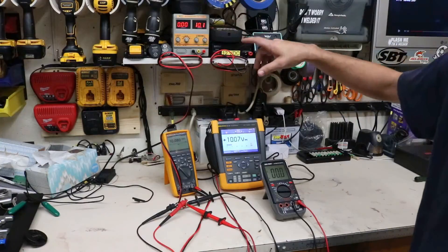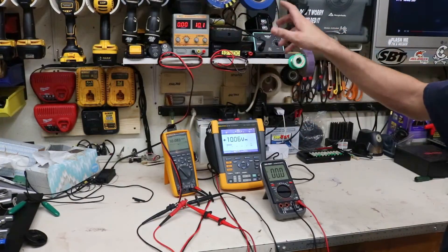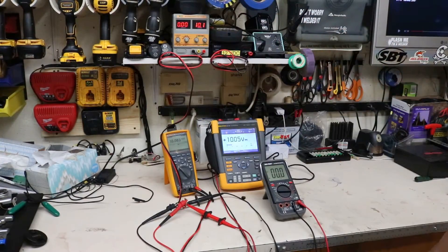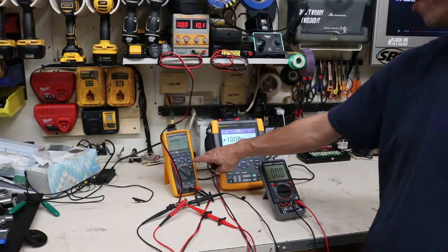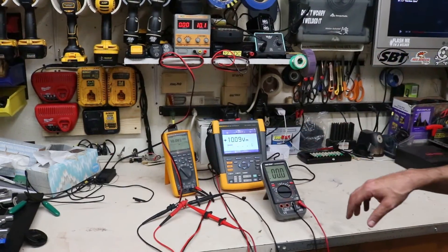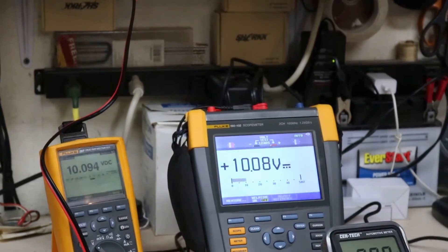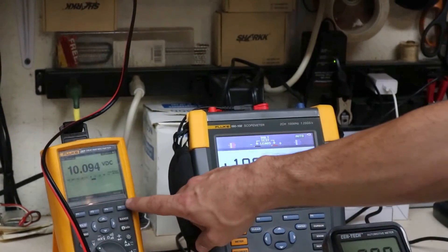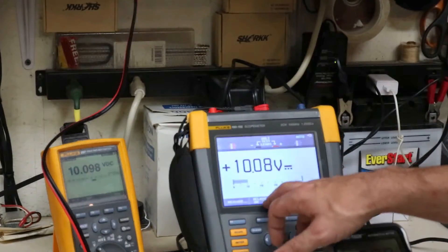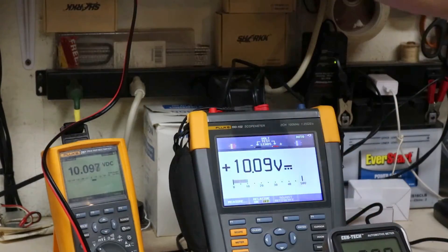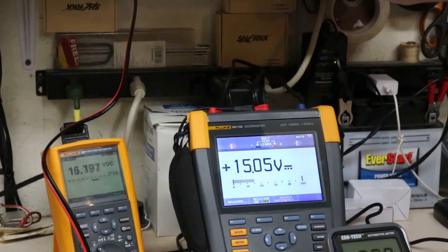You can see this power supply isn't calibrated either. It looks like it's about maybe a quarter of a volt or a half a volt off. So what I got on the 287: I have 10.09 volts DC, and I got 10.08 volts DC on my oscilloscope. So now I'll max this power supply out.